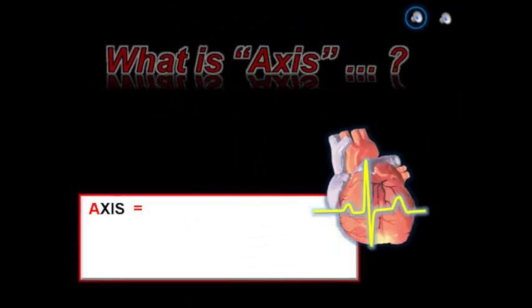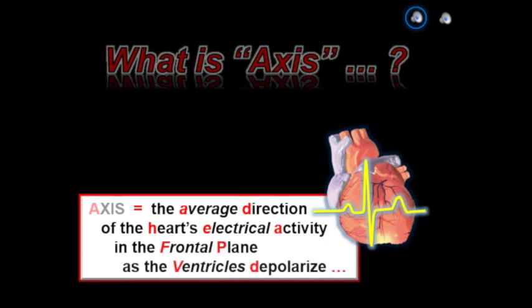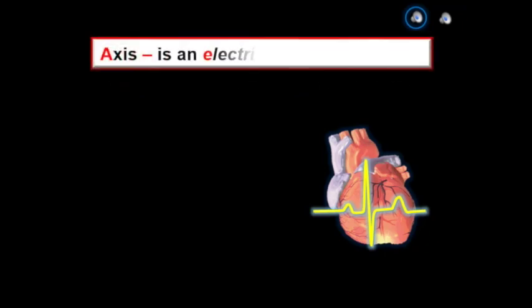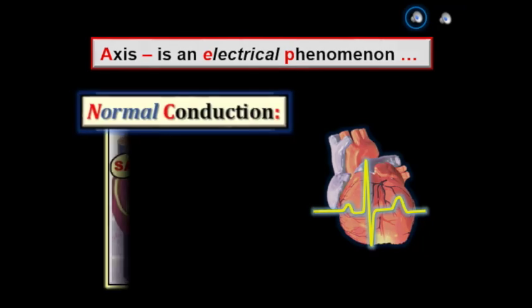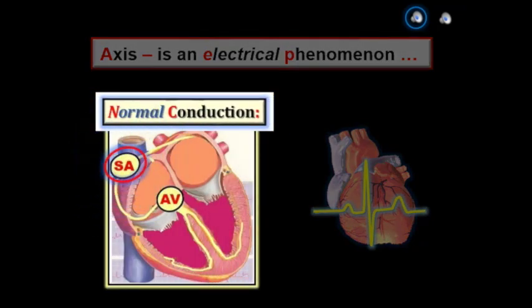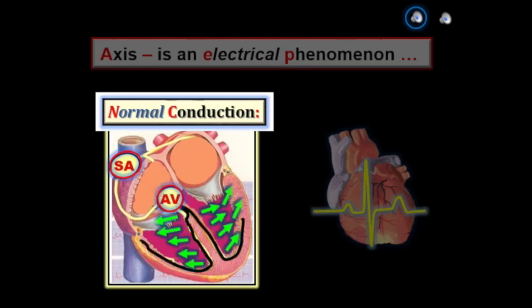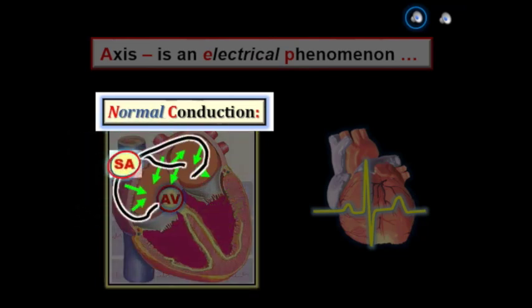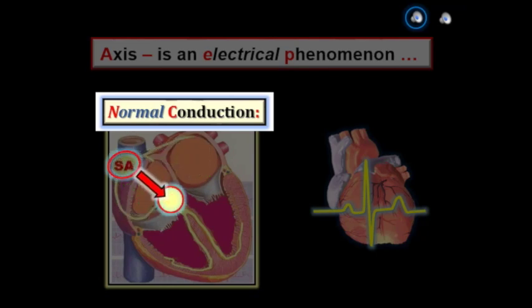What then is axis? We define the mean QRS axis as the average direction of the heart's electrical activity in the frontal plane as the left and right ventricles are depolarized. So axis is based on assessment of the heart's electrical activity during ventricular activation. The electrical impulse begins in the SA node, then travels through specialized intra-atrial pathways to quickly arrive at the AV node.